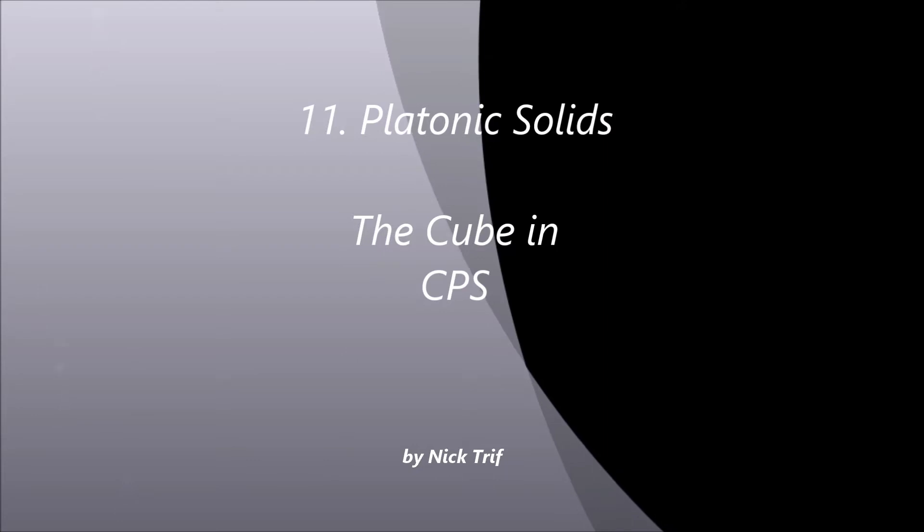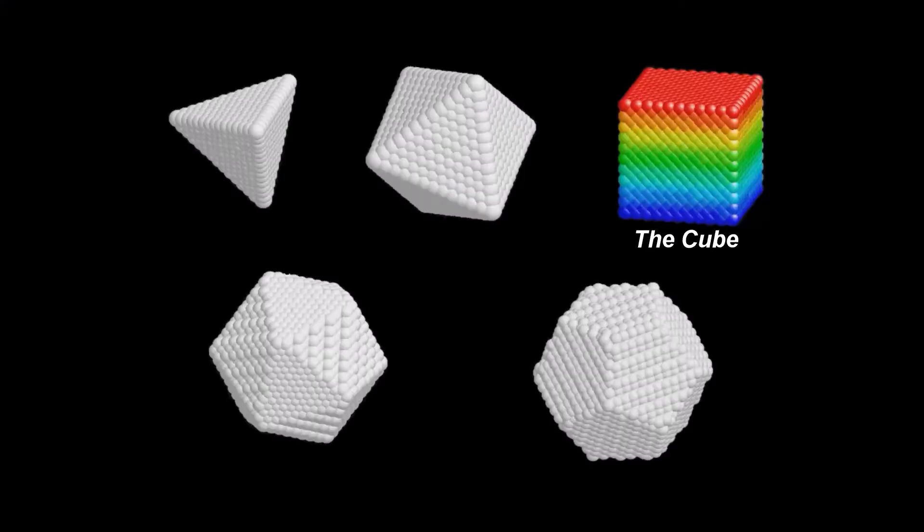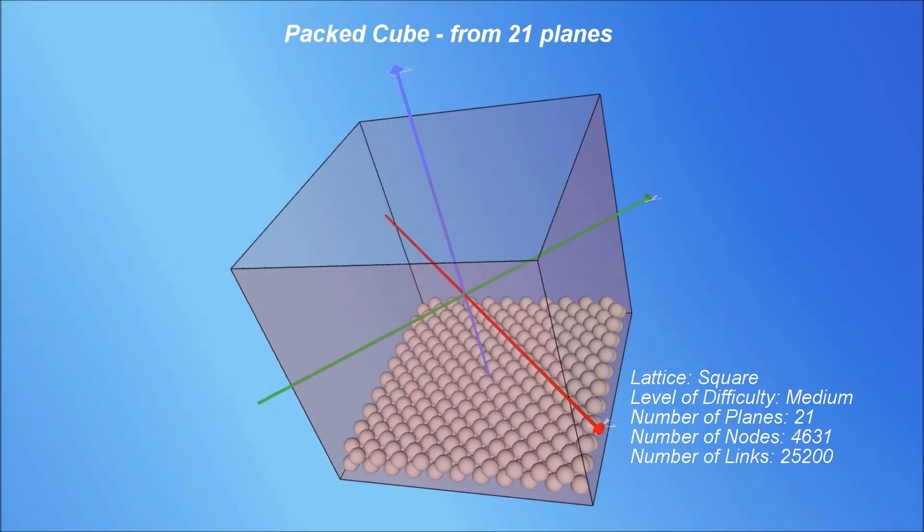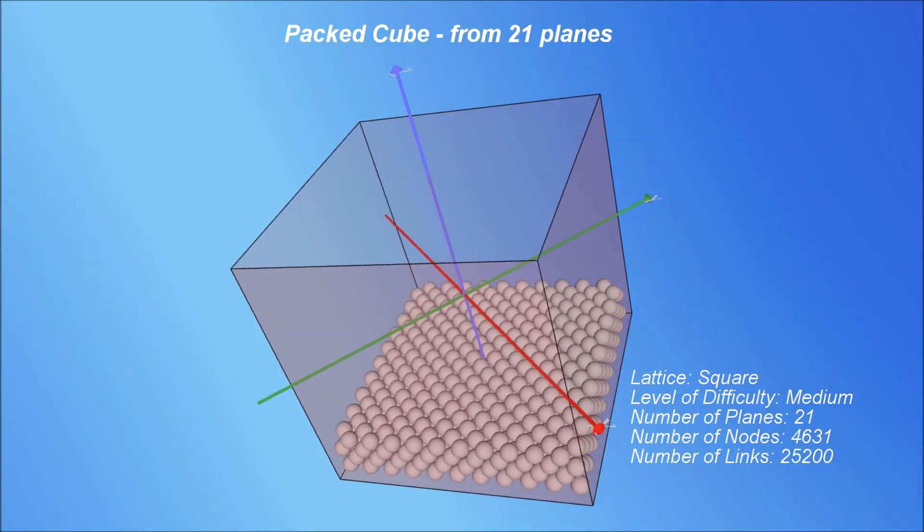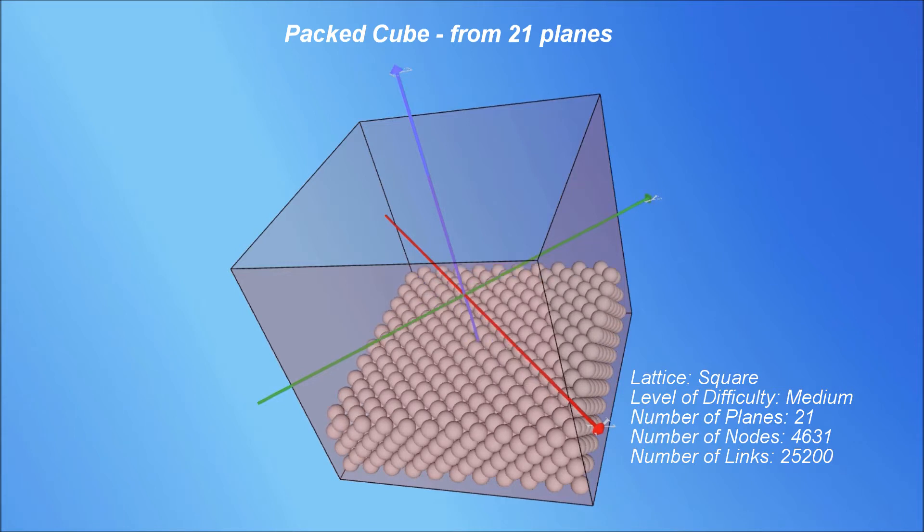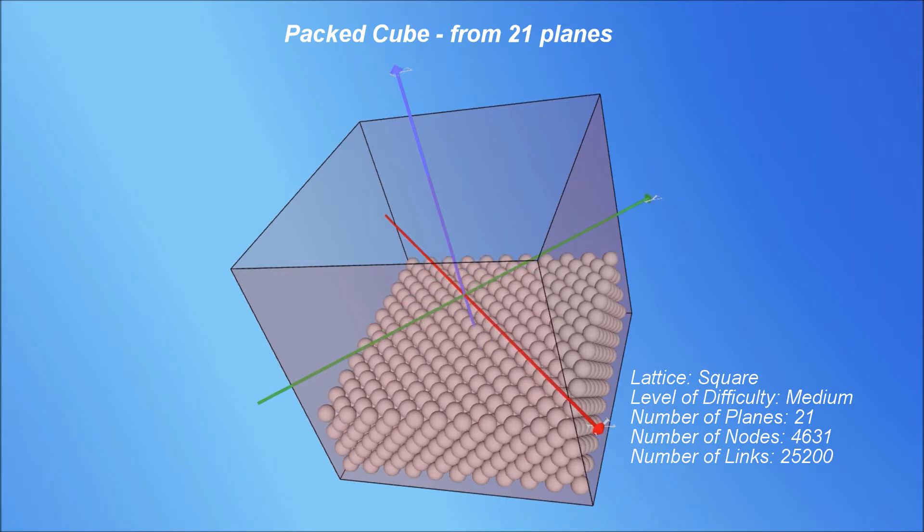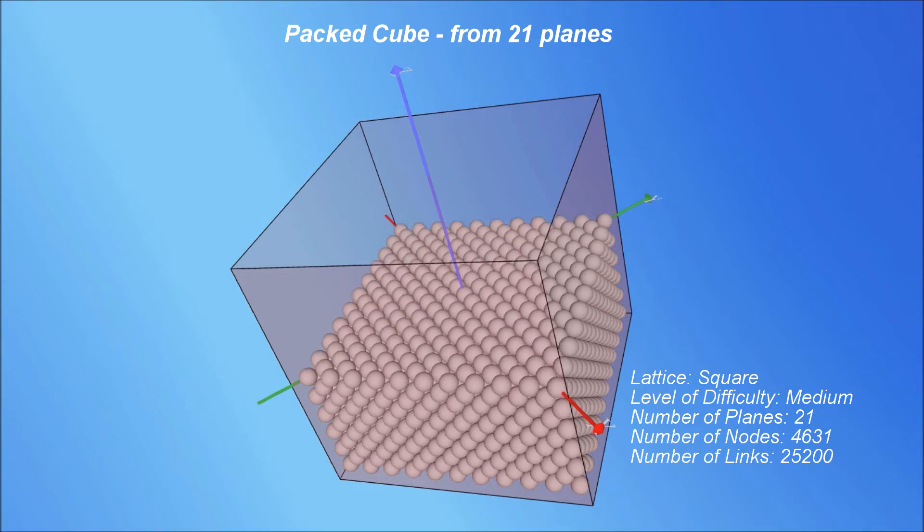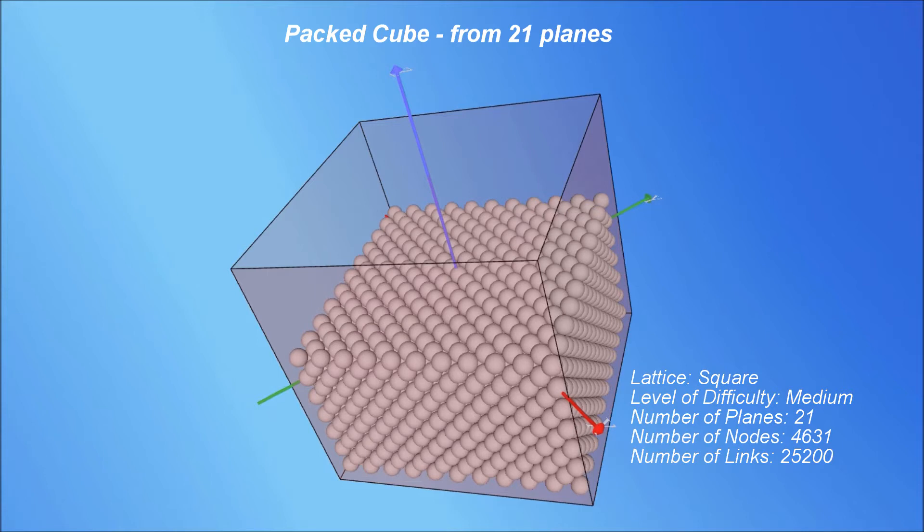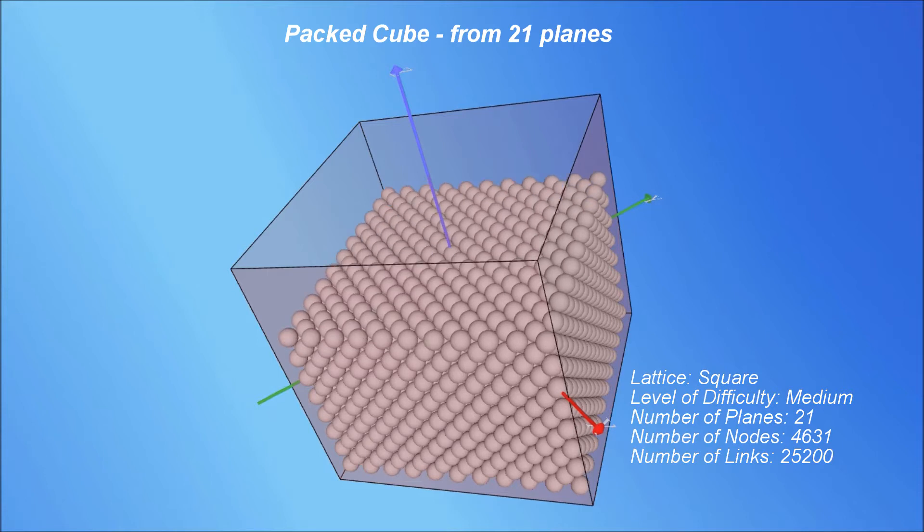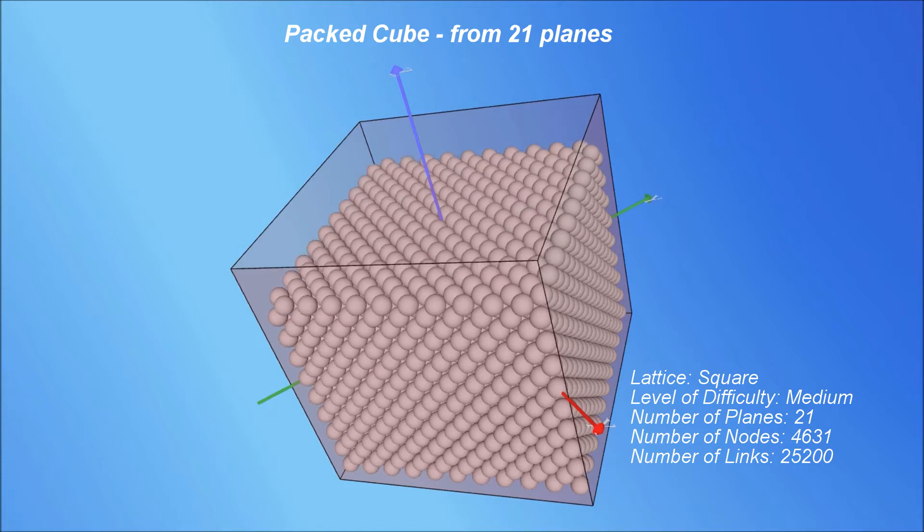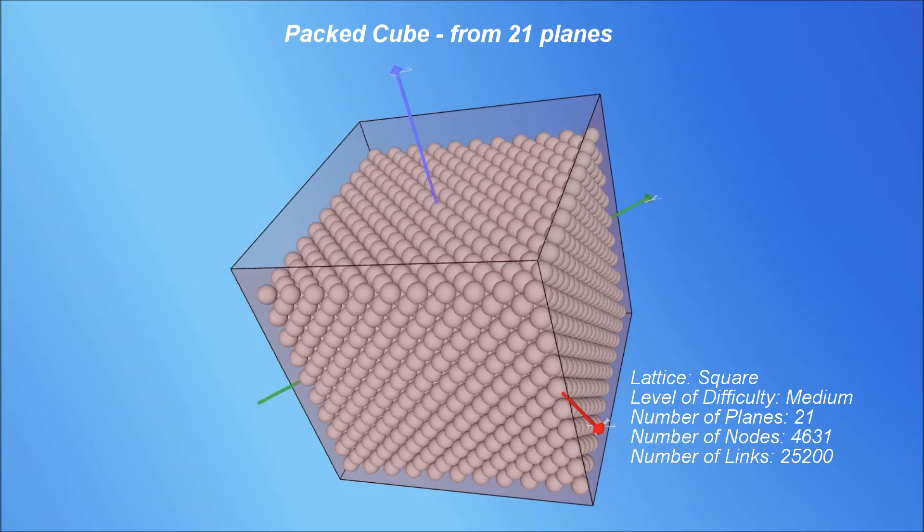Platonic solids. The cube in CPS. To locate a cube structure in CPS is not so obvious. The cube is based on a stack of square lattice planes. Please note that the patterns develop along the diagonals of the three Cartesian planes. This provides the symmetry along the three orthogonal axes and the familiar cubical shape.